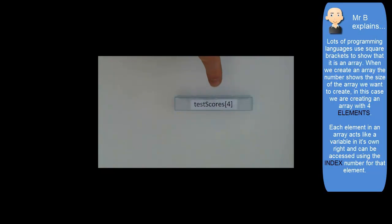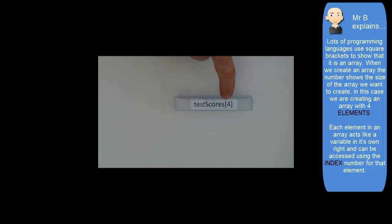As an example, let's say for these test scores there were four students. I'd want to declare an array that had four compartments like this one. The name of the variable is here, and in square brackets—which is fairly common notation in most programming languages—we say the size of the array.